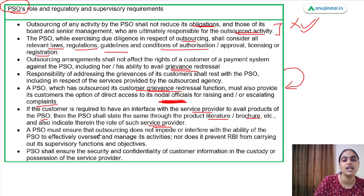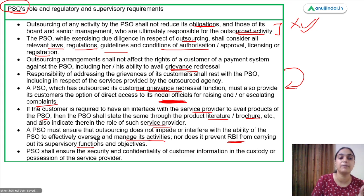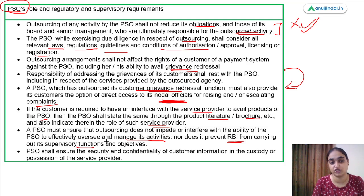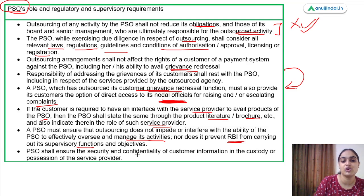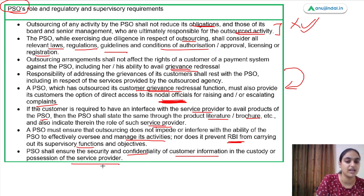You must ensure that outsourcing does not impede the ability to oversee and manage activities, and does not prevent RBI from carrying out supervisory functions. You must be able to oversee the service provider's activities, and RBI should be able to supervise properly. The PSO shall also ensure the security and confidentiality of customer information in the custody of the service provider.